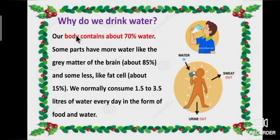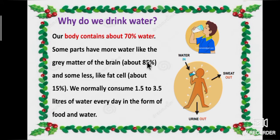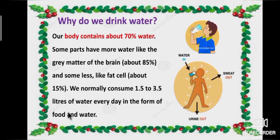Why do we drink water? Our body contains about 70% water. Some parts have more, like the grey matter of the brain, which is about 85% water. We normally consume 1.5 to 3.5 liters of water every day in the form of food and drink. We should drink water to maintain the water level of the body.